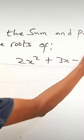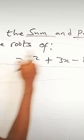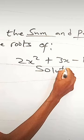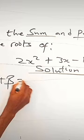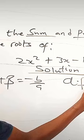Find the sum and product of the roots of this quadratic equation. So to find the sum of the roots, that is alpha plus beta, that is minus b over a. And the product of the roots, alpha times beta, that is c over a. Just use this.